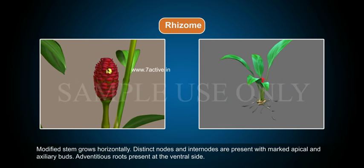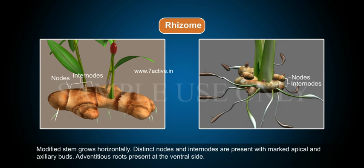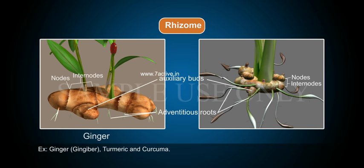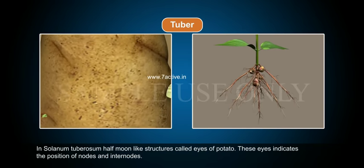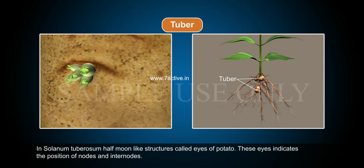Rhizome: a modified stem that grows horizontally. Distinct nodes and internodes are present with marked apical and axillary buds. Adventitious roots are present at the ventral side. Examples include ginger, turmeric, and Curcuma.